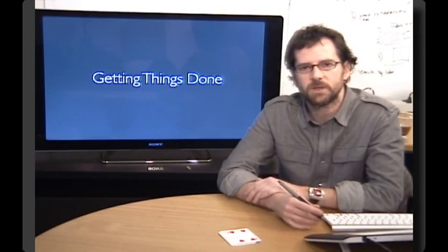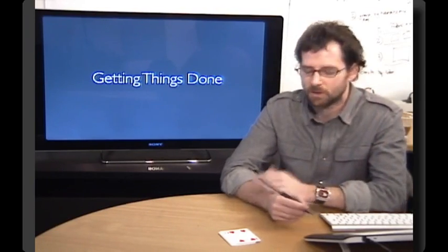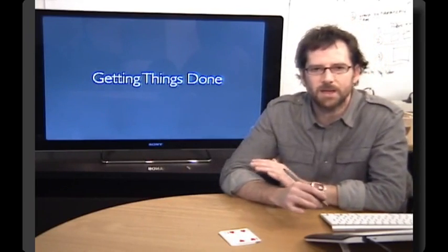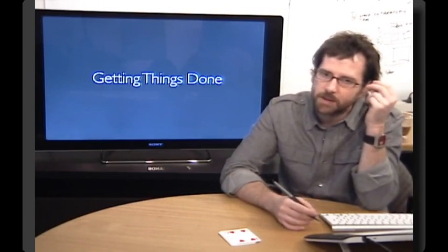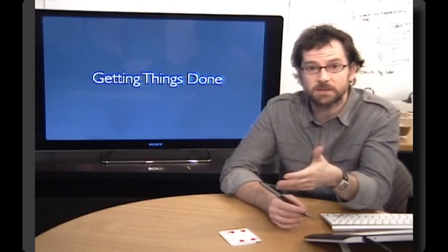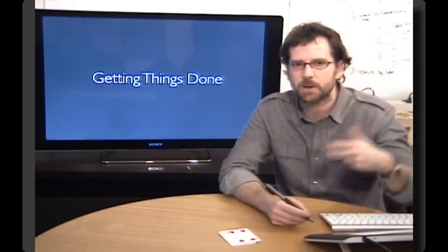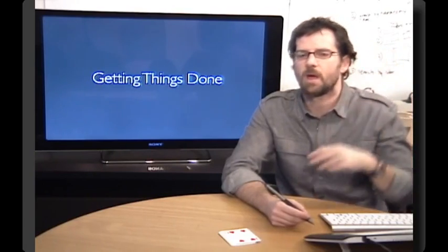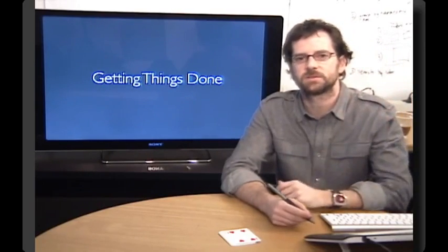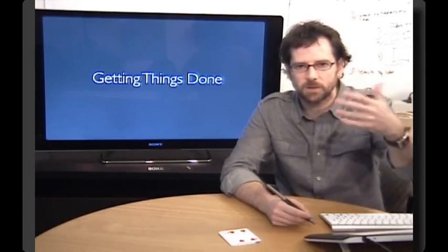So for example, one of the rules of the Getting Things Done system is that whenever something comes to your mind that you need to do, the first thing you do is write it down somewhere, anywhere. And the reason for that is if you have something in mind that needs to be completed and you haven't written it down yet, you're spending a lot of cycles of working memory remembering to - I need to do my laundry this evening, I need to do my laundry, I need to do my laundry. And that's chewing up resources that could be better deployed elsewhere. Write it down, gets it out of your mind, and you can move on.